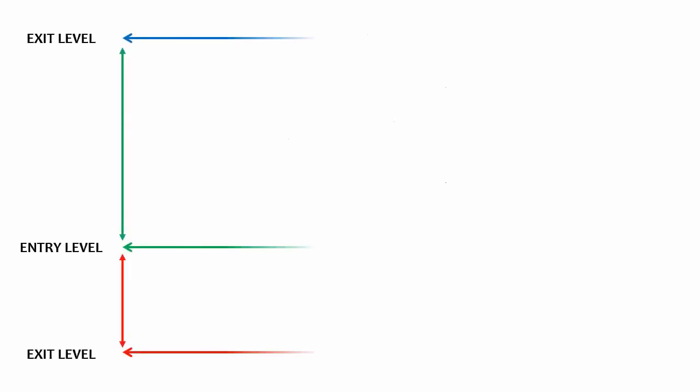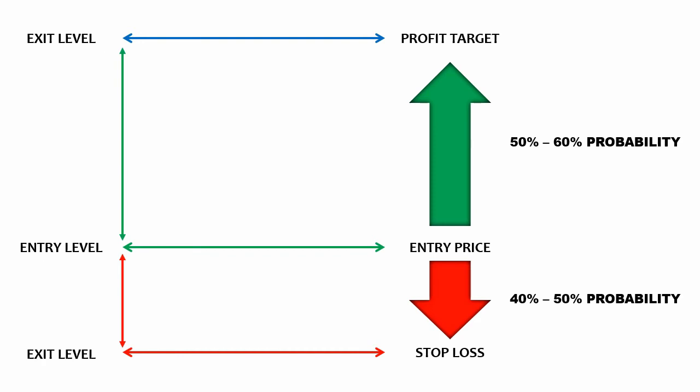For example, during an uptrend there's a high probability — maybe 60% — that price is going to continue going up, and a 40% chance it could reverse against you. While it's not guaranteed, going long during an uptrend gives you better than 50-50 odds. That 60-40 split represents a 20% edge over the markets — way bigger than the casino's 5.2% edge that generates millions of dollars in consistent profits.